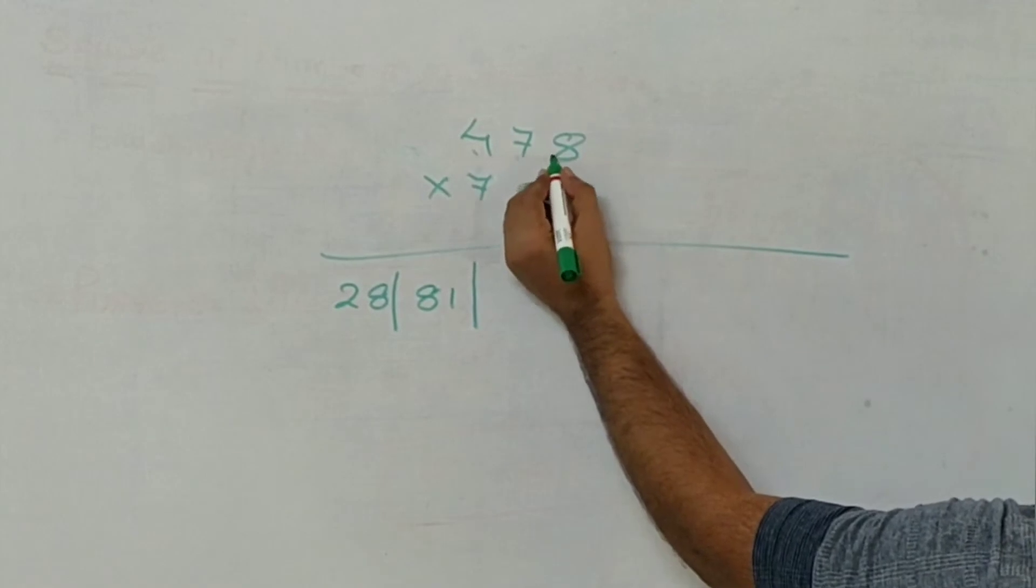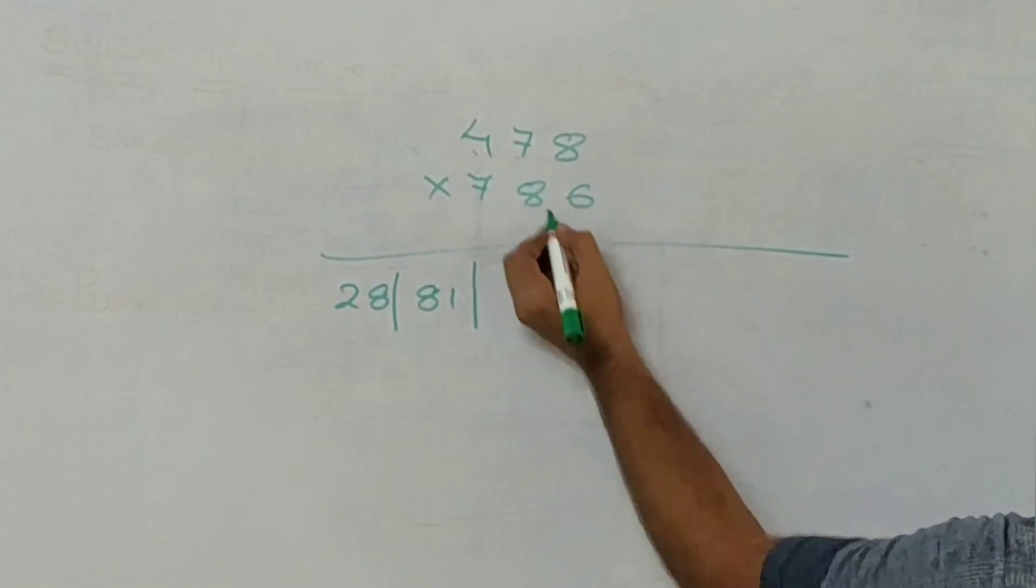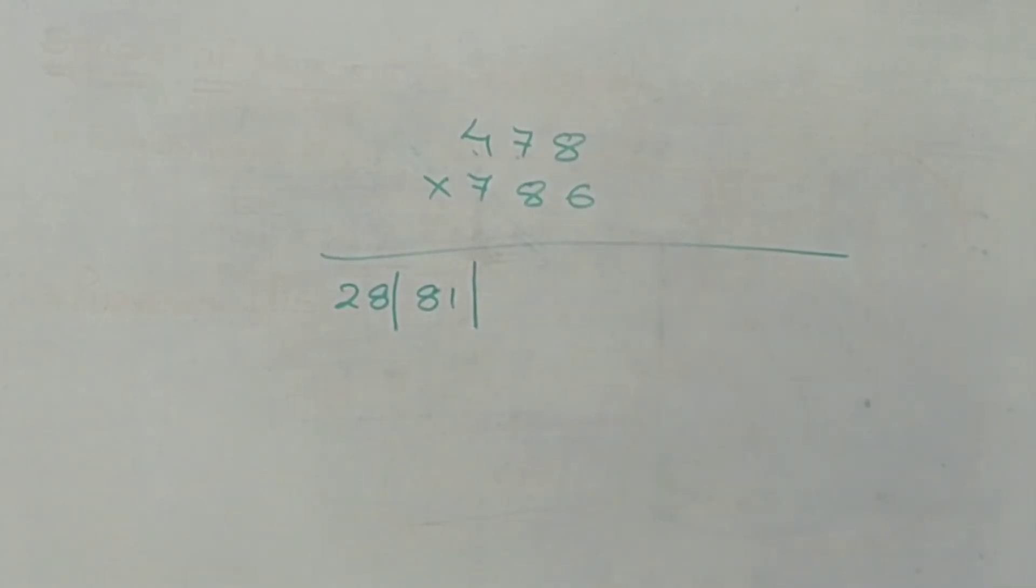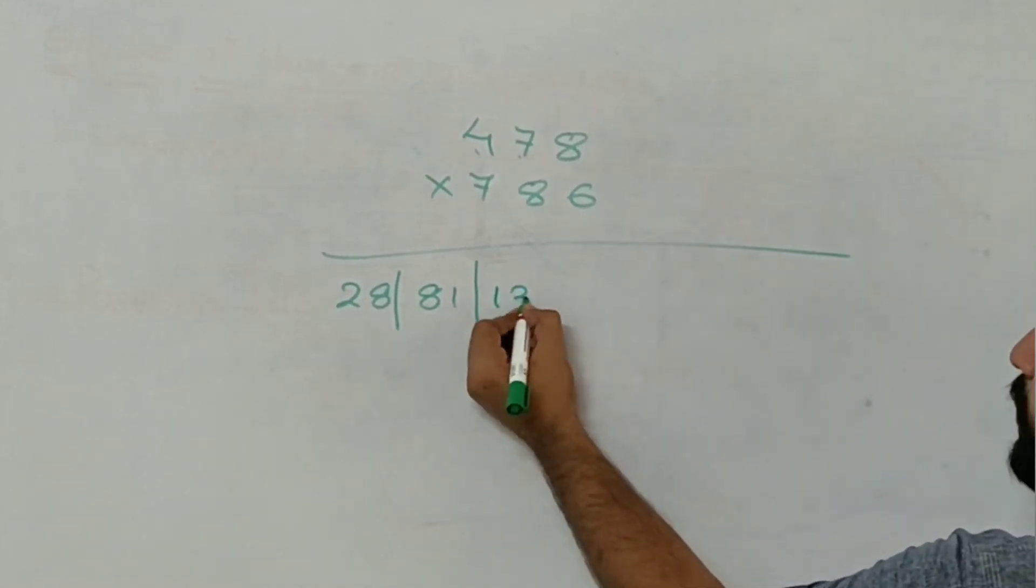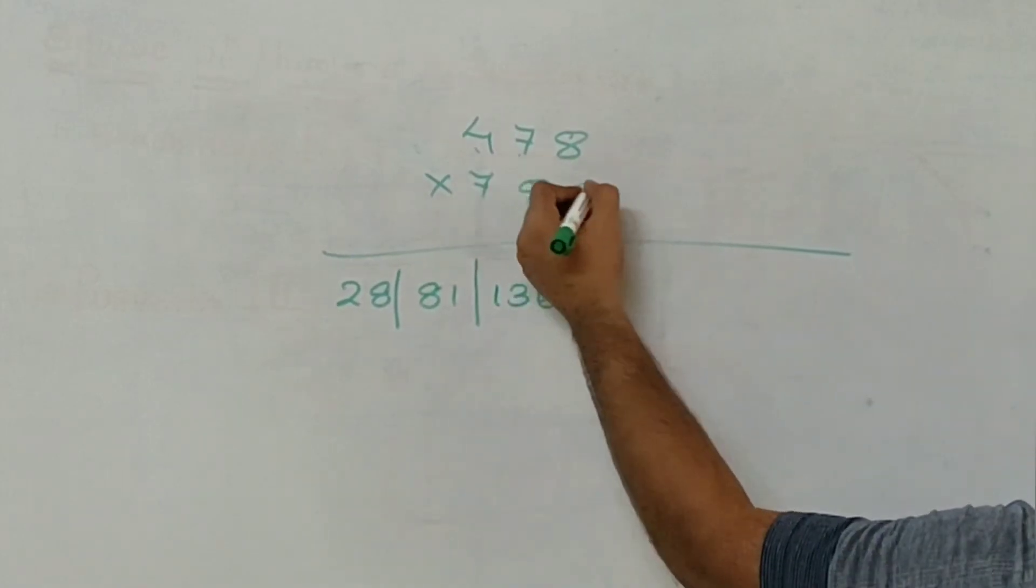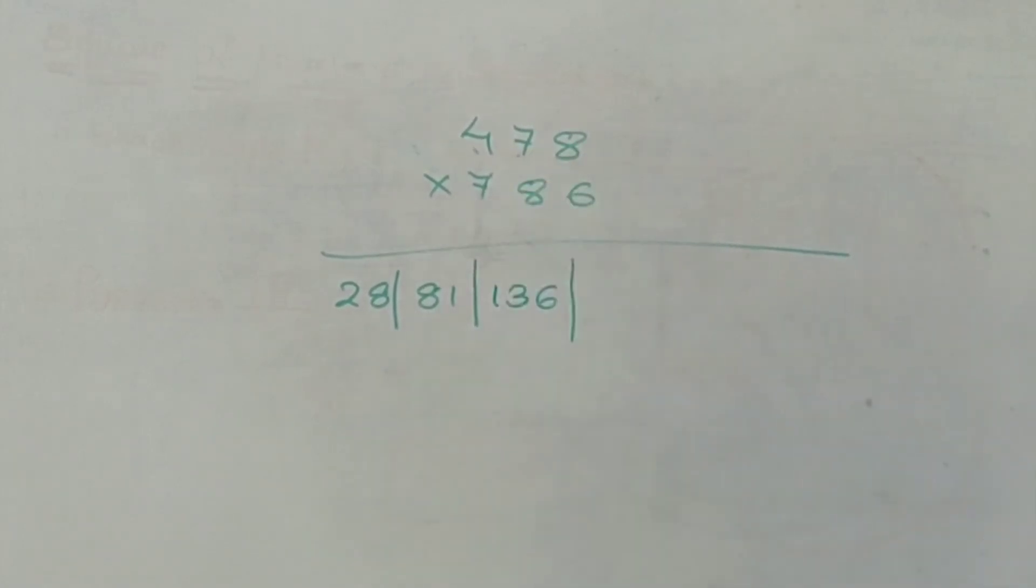4, 6 are 24, 8, 7 is 56. So 24 plus 56 gives me 80, 80 plus 56 gives me 136. And last plus 48.